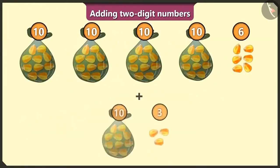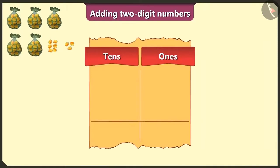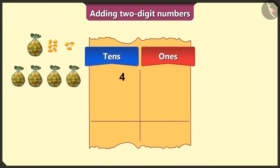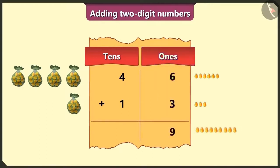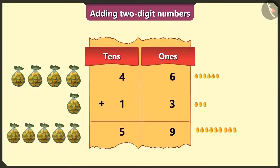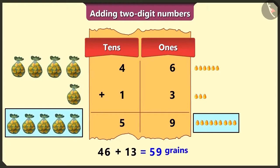Now to these 46 grains, I add 13 more. So how are we going to add them both? For the number 46, we will write 4 in the tens box and 6 in the ones box. To add 13 to this number, we write 1 in the tens box and 3 in the ones box. Now first we will add the numbers in the ones box — 6 and 3 will make 9. Now in the tens box, the numbers 4 and 1 will add up to 5. So how many grains do we have here in total? If we add 4 tens and 6 grains to 1 ten and 3 grains, then we get a total of 59 grains.